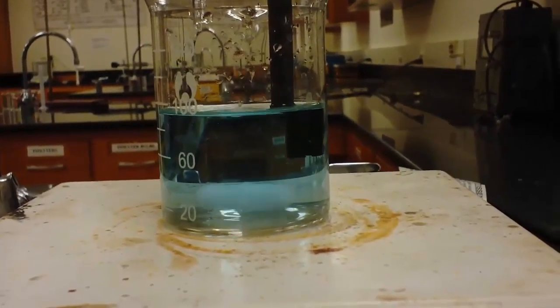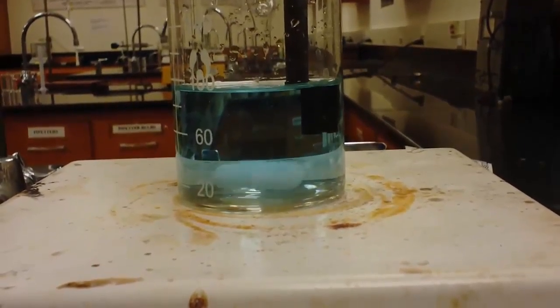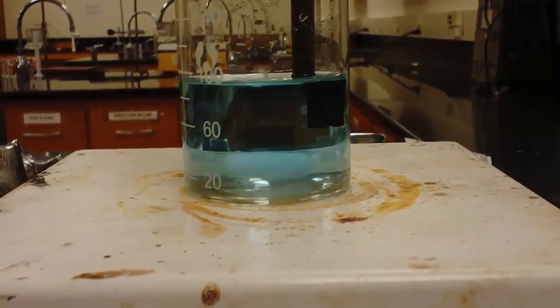If the spin bar hits the end of the pH meter, it can damage it. This is about the speed that you want your solution to be spinning. This ensures continuing mixing.